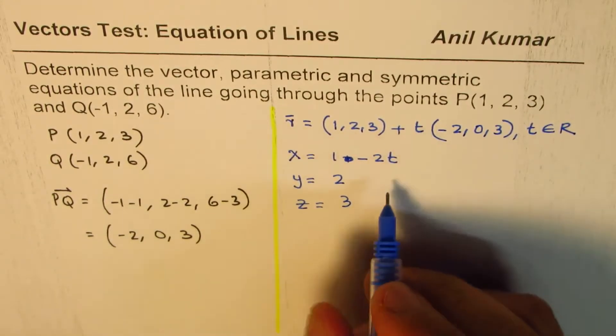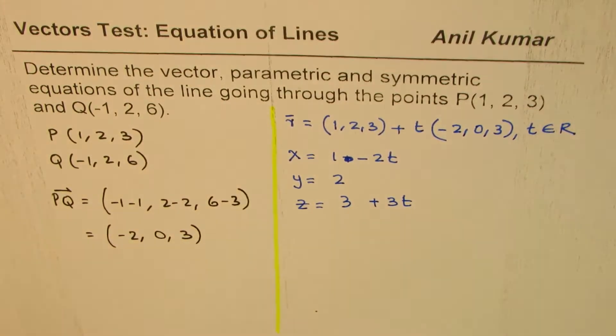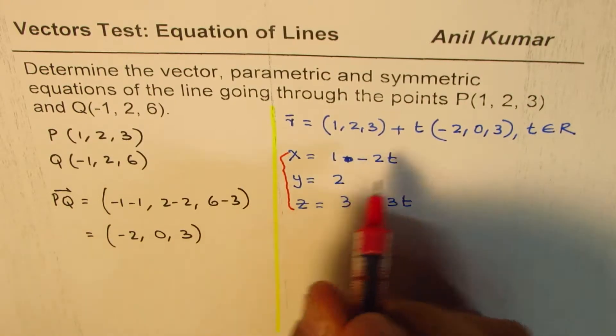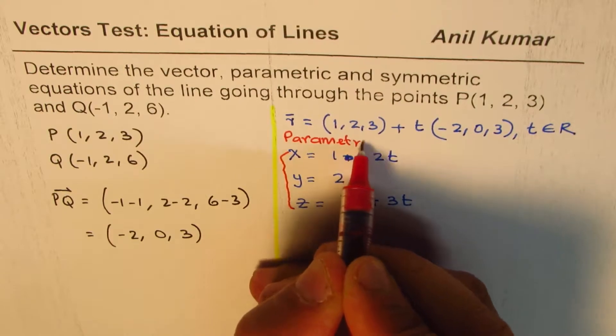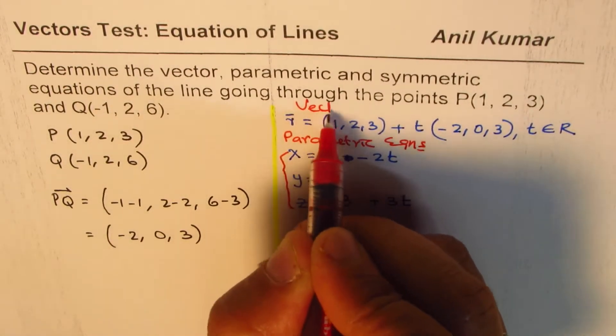0 times anything is 0, so that's okay. And z equals 3 + 3t. So these set of equations form the parametric equation. So this is parametric.